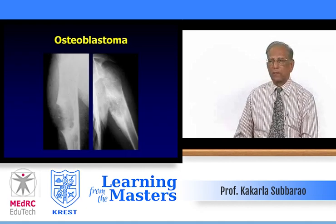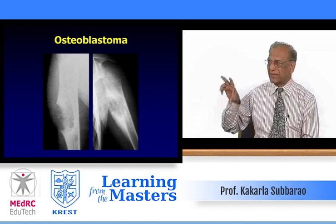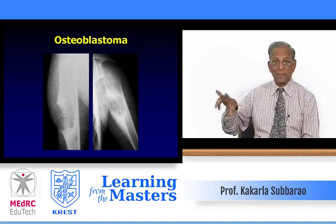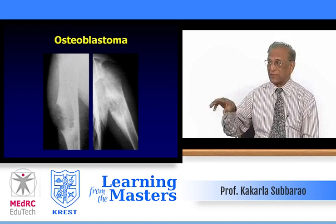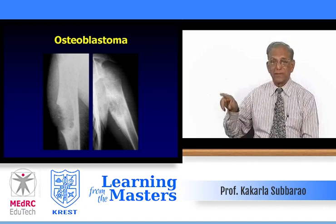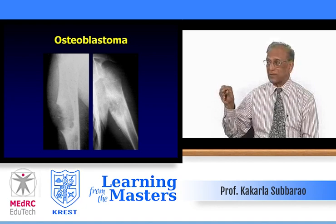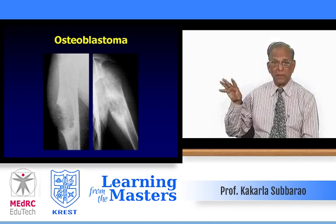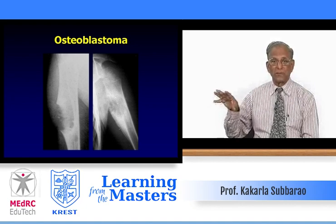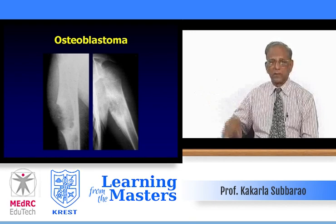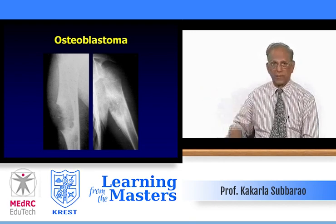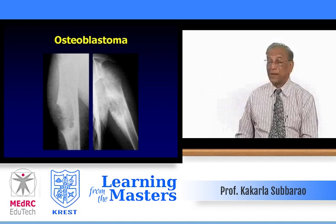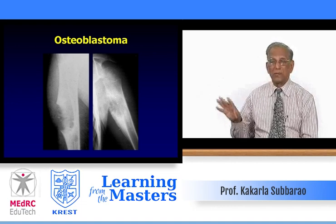Two humeri — on the left side, a mid-shaft expansile eccentric lesion with central hook-like, nugget-like calcifications. This is a paraosteal chondroma, extracortical, expanding into the medullary cavity — an eccentric type of chondroma, sometimes called enchondroma. On the right side, a similar lytic lesion but with a triangular periosteal reaction and more sclerosis. The central density is not calcium but is osseous density. This is osteoblastoma with a lucent nidus more than two centimeters.